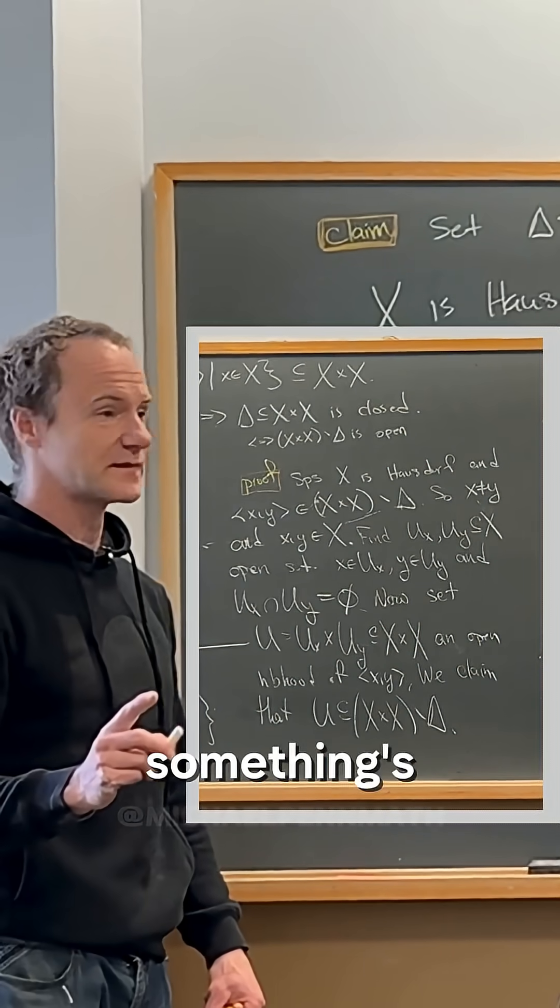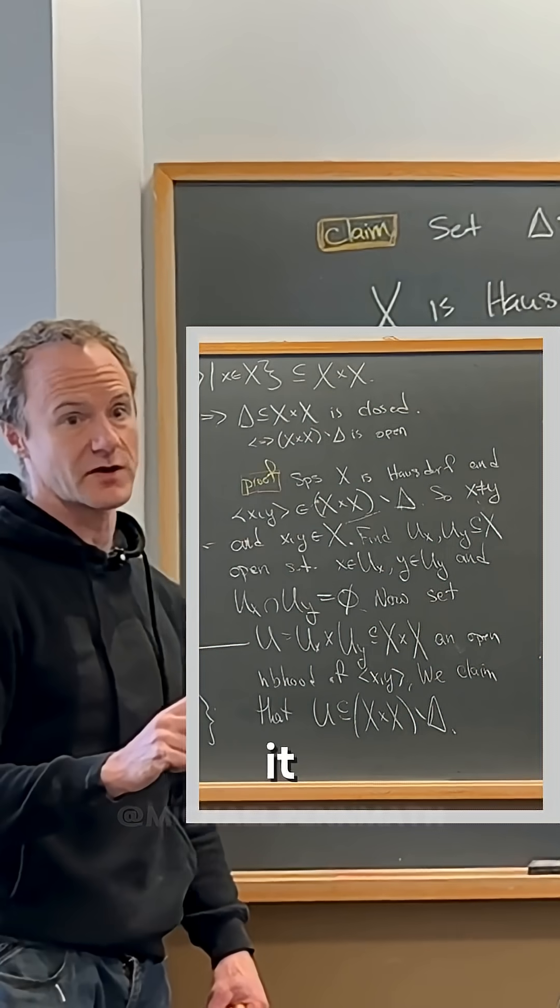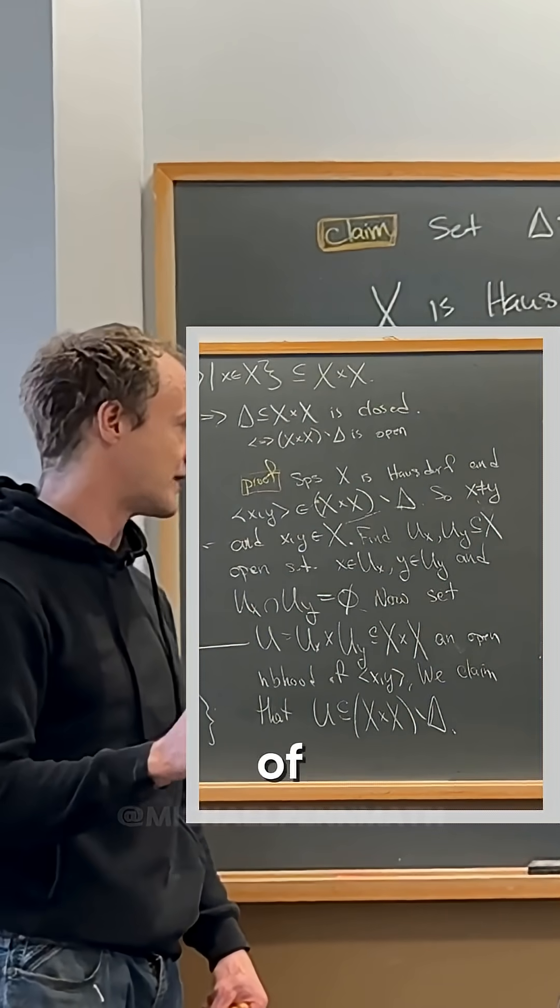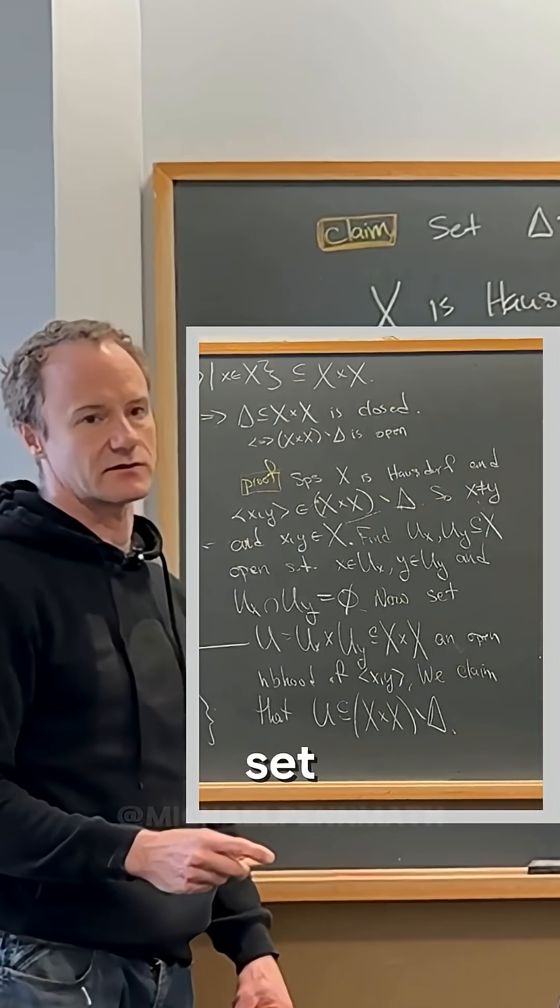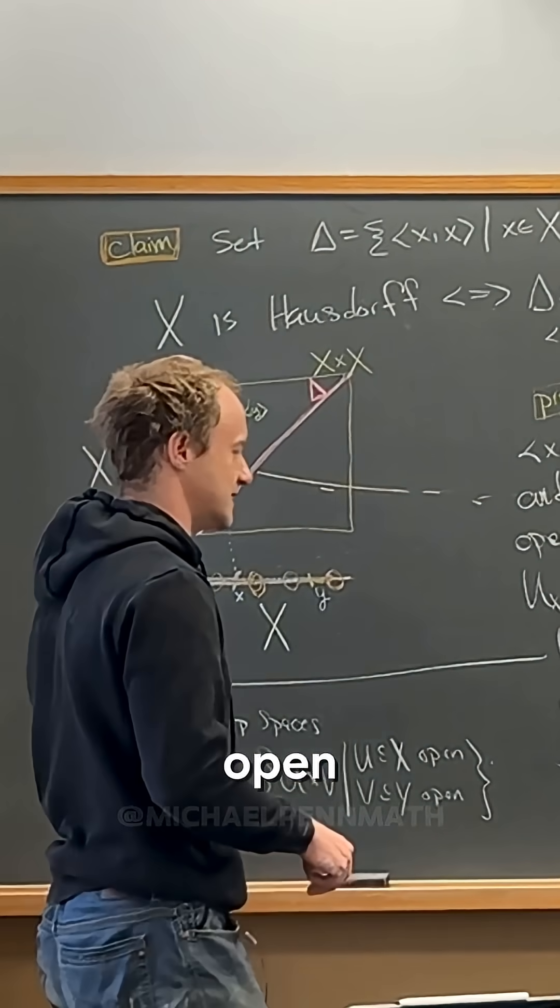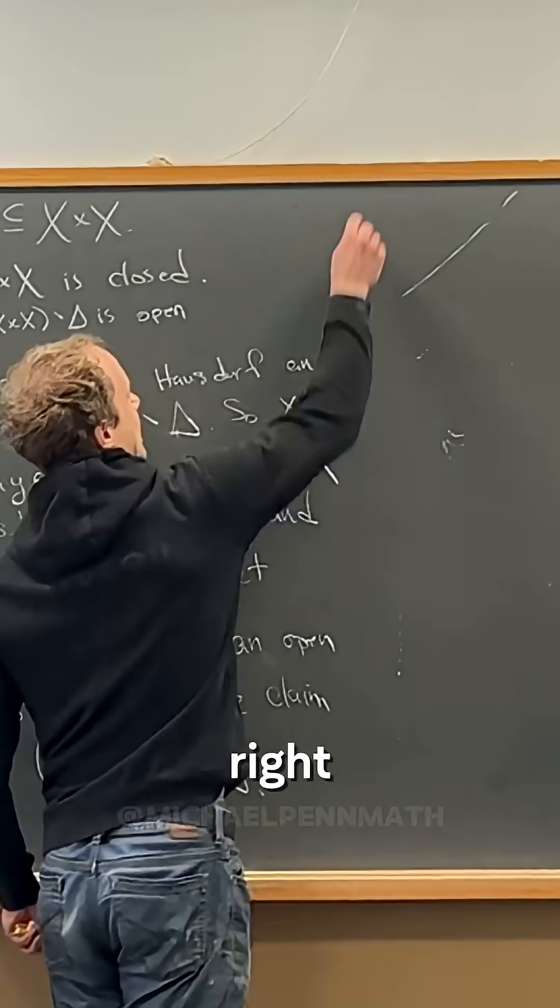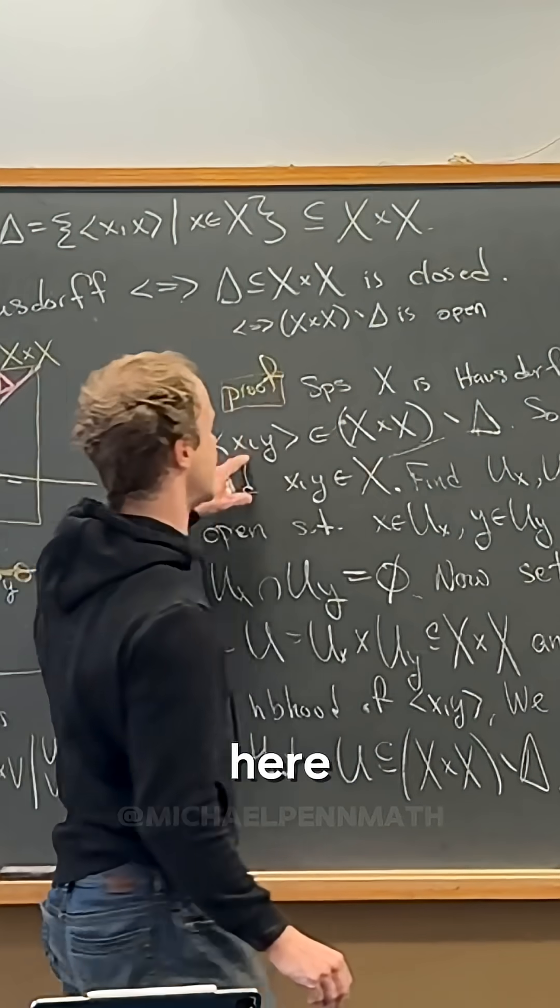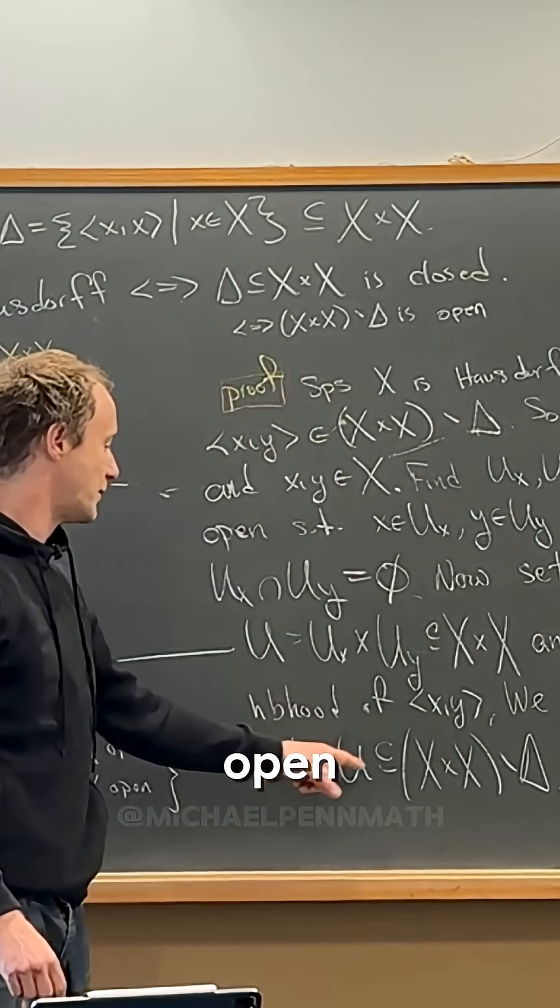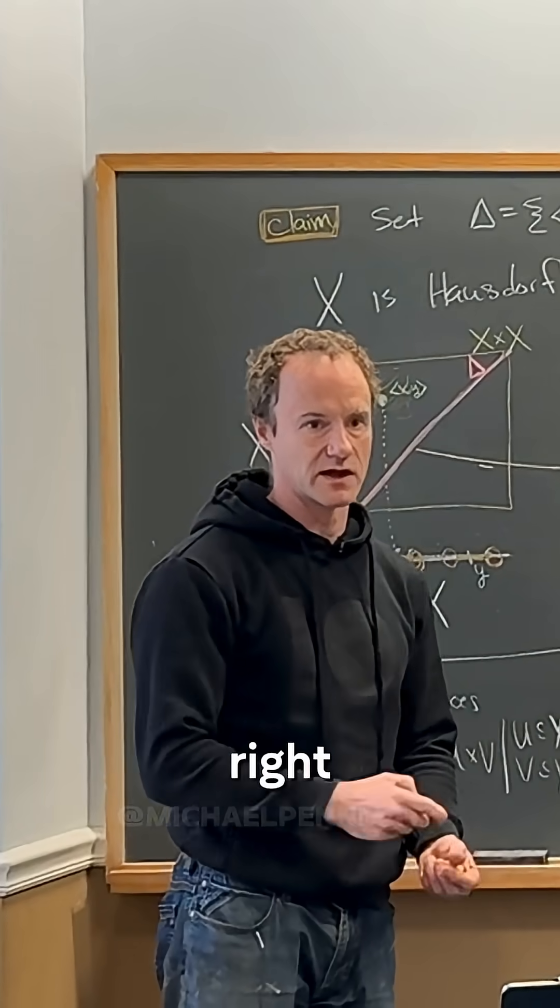Because anytime you want to show something's open, you pick a point from it and you find an open neighborhood of that point which is contained within the set, right? Contained within the would-be open set. And that's exactly what we're doing here, right? We took a point from it right here and we found an open neighborhood that we hope is totally contained in the set, right?